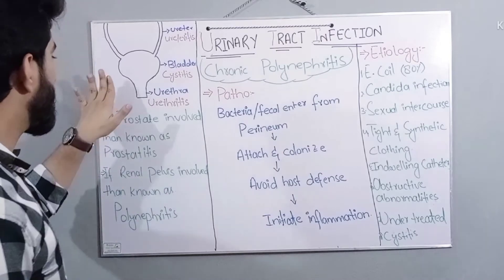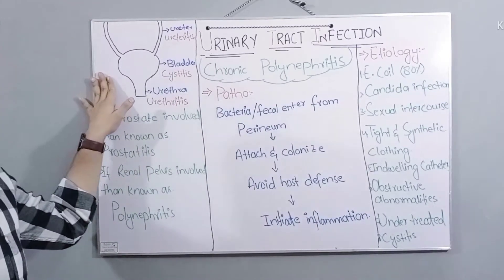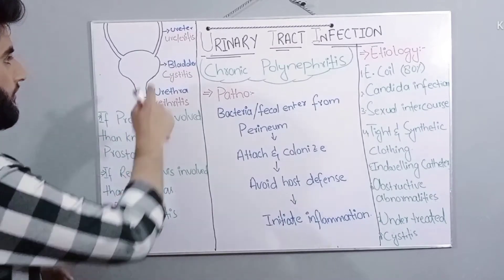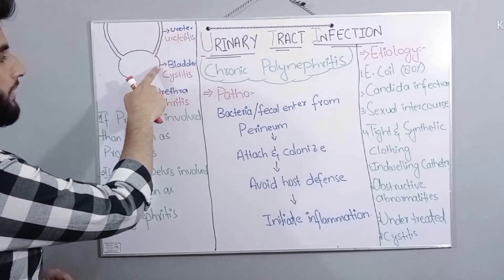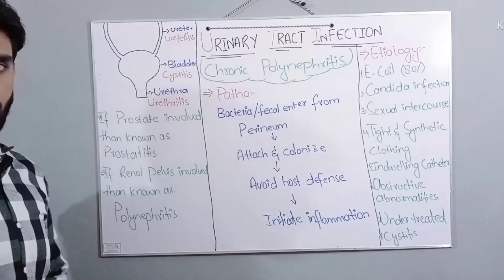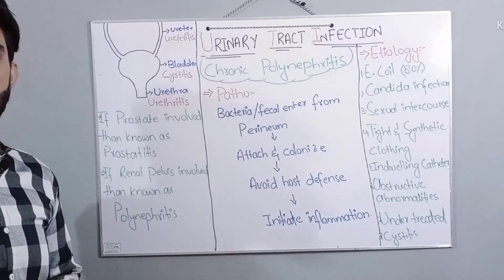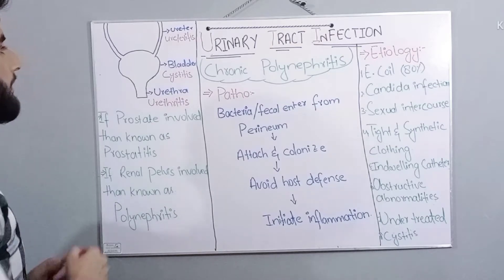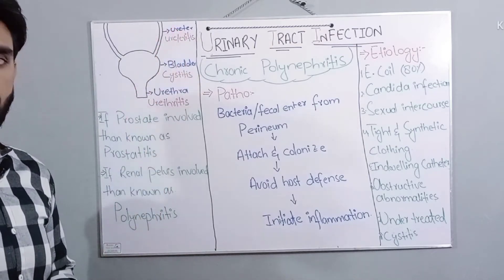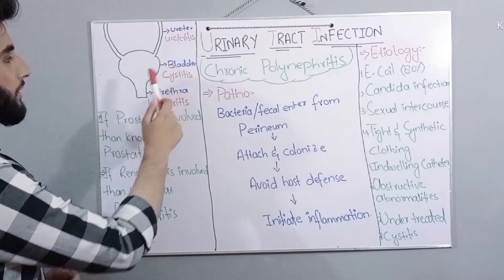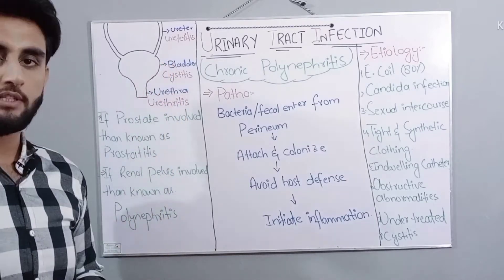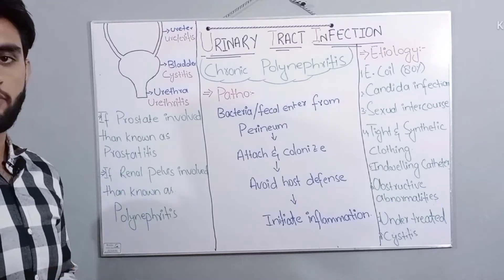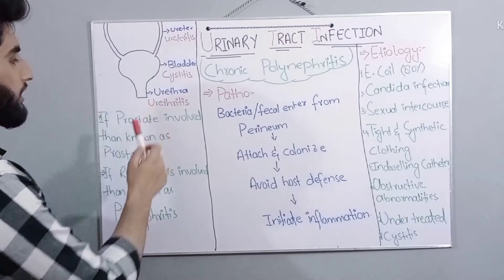Here you can see the structure of the lower urinary tract. It has three major parts: the first is the ureter, then the bladder, and the other is the urethra. If the infection belongs to the bladder, it is called cystitis — discussed in one of my videos, the link is given in the description below. If the infection belongs to the urethra, it is known as urethritis.